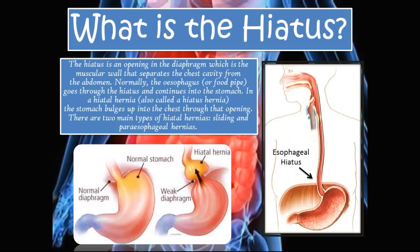Now that we know what the word herniate means, let's talk about what the hiatus is. The hiatus is an opening in the diaphragm, which is the muscular wall that separates the chest cavity from the abdomen. Normally, the esophagus or food pipe goes through the hiatus and continues into the stomach.